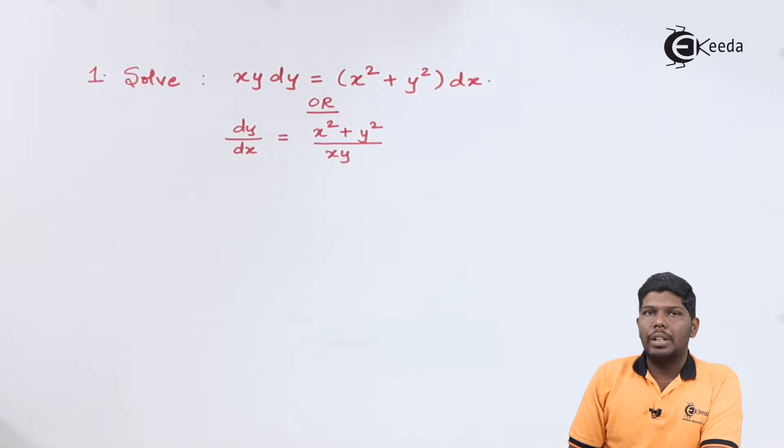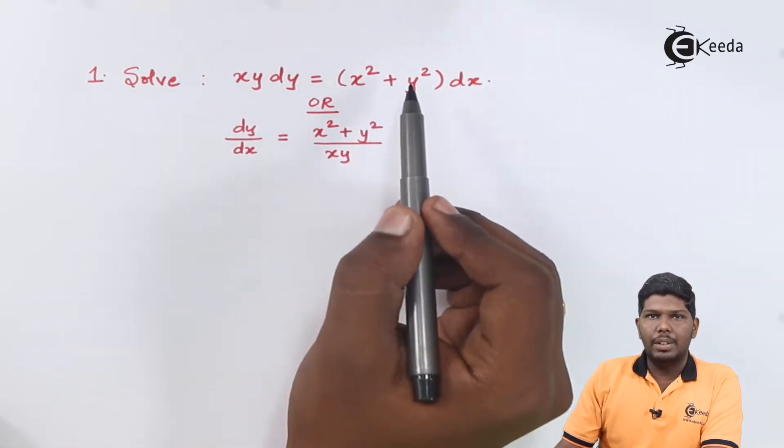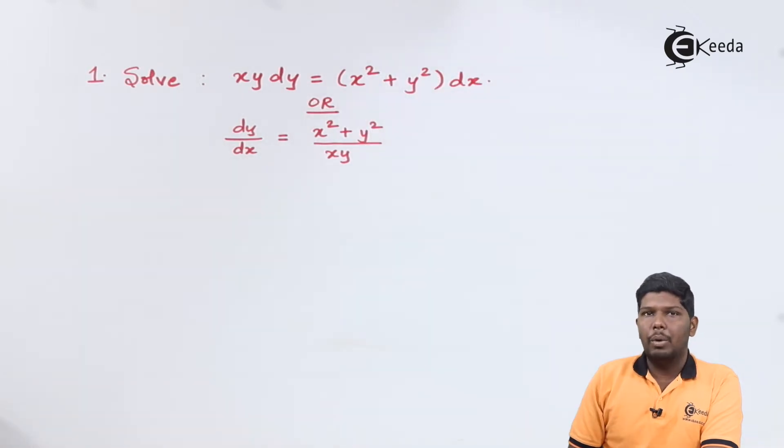Similarly, here I have two different terms, again both are having same power. So in a homogeneous function, the power of each collective term should be same and that is a way to identify homogeneous function.